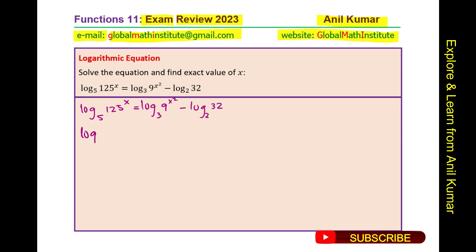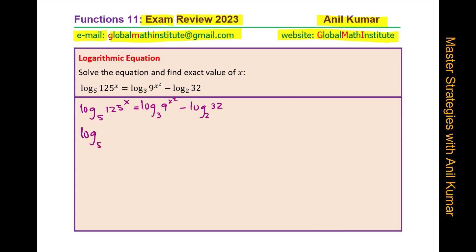All the numbers and their bases kind of match as exponents. We can rewrite: 125 is 5 cubed, so we get log to the base 5 of 5 to the power of 3x. Similarly, 9 is 3 squared, giving log to the base 3 of 3 to the power of 2x squared. And 32 is 2 to the power of 5, so we have minus log to the base 2 of 2 to the power of 5.